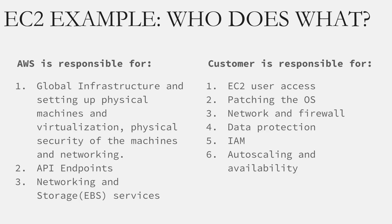For Amazon EC2 instances, AWS is responsible for global infrastructure, physical machines, virtualization, physical security, networking, API endpoints, and the networking and storage services that go with EC2. The customer is responsible for managing who has access to the EC2 instance, setting passwords, patching the operating system, setting up security groups and NACLs on the VPC, encrypting data on EC2 instances, setting up IAM permissions, and ensuring the EC2 instances are available and performing well — for example, using services like autoscaling.